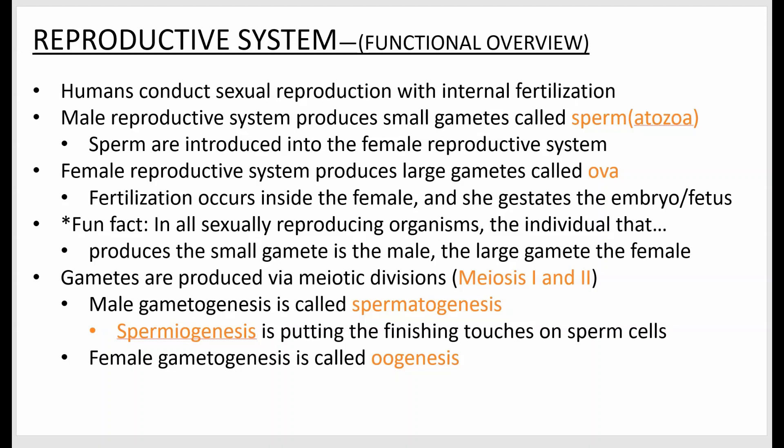Gametes are produced through meiotic divisions — meiosis one and two, which I'll mention later, and there's a big video about it in the video folder. Spermatogenesis is male gametogenesis and oogenesis is female. There's also a term spermiogenesis, which involves getting rid of some extra organelles and making the sperm motile — that's a second process that occurs after spermatogenesis, so notice that spelling difference.